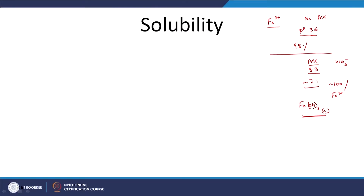For this particular scenario at pH 7.1, where we had 99–100% precipitation, it was good enough and we did not need to add any further base. That was our logical reasoning from the last session.